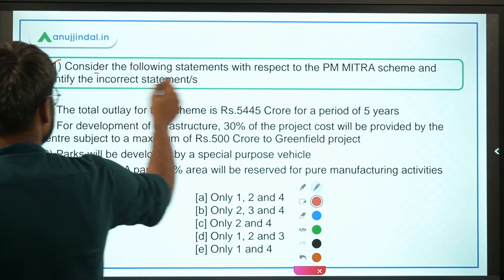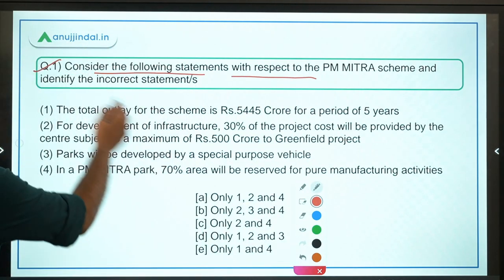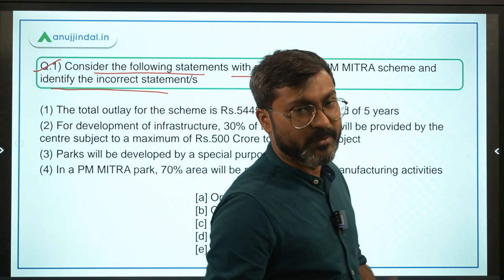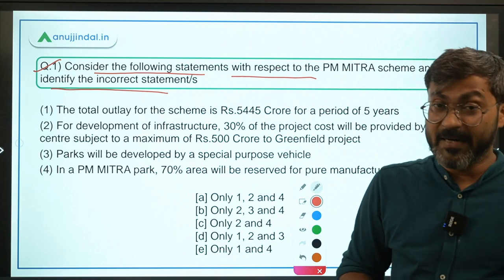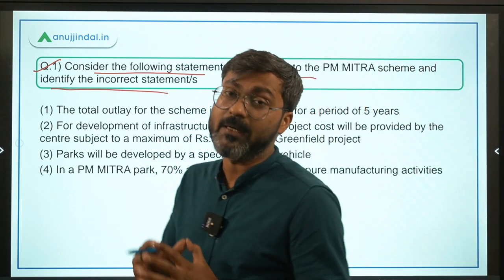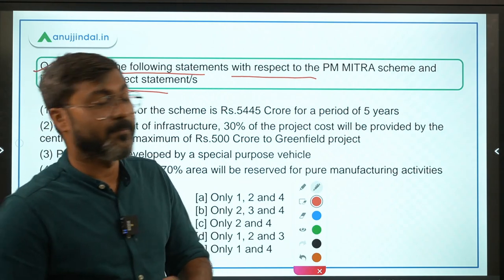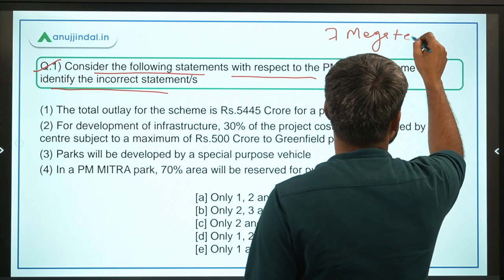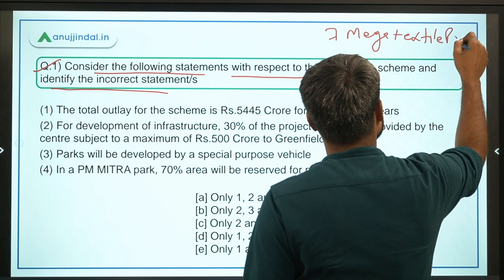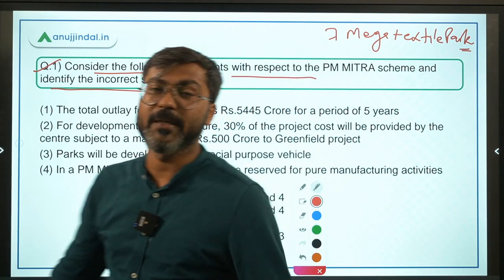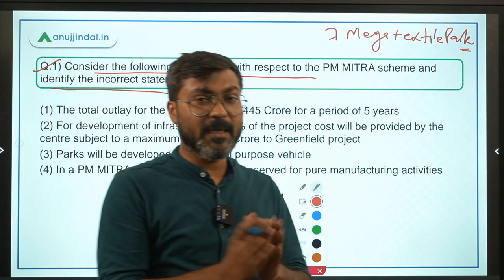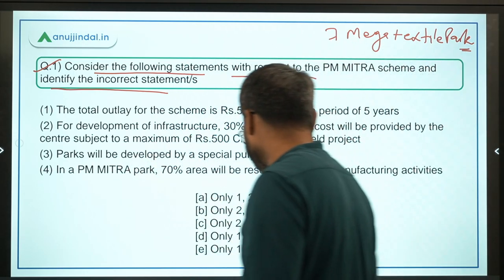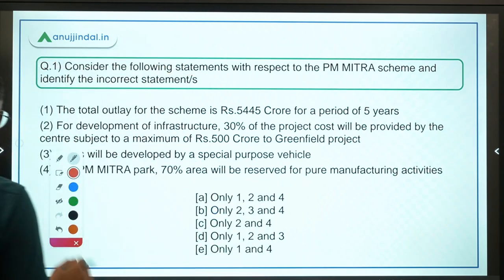Question number one: consider the following statements with respect to the PM MITRA scheme and identify the incorrect statement. If you remember, in the Union Budget 2021-22, the Finance Minister announced setting up seven mega textile parks across the country. That scheme is called the PM MITRA scheme. The PM MITRA scheme has now been approved by the union government, and that's why we are studying about it.